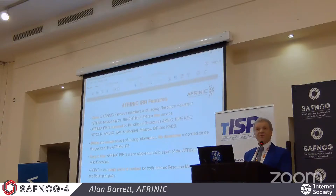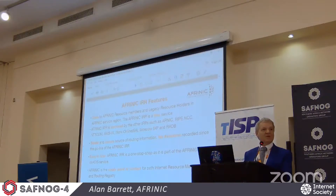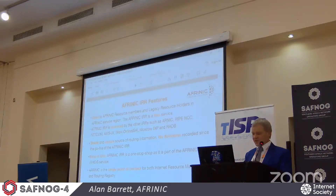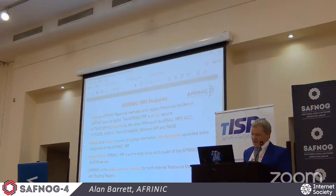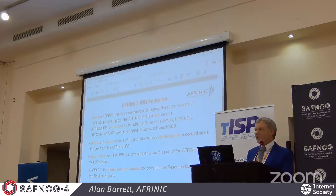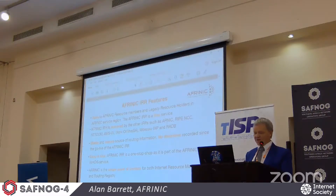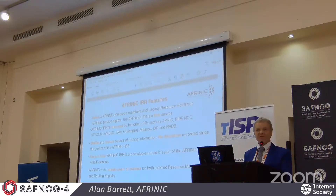AFRINIC's routing registry is a free service open to AFRINIC members. You have to have IP address space which has been assigned or allocated through AFRINIC, and then you can use it. It's been reliable — since we introduced it in 2013, there's been zero downtime on the query side. Prior to 2013, network operators in Africa were encouraged to use the RIPE routing registry, and they did that a lot. More than 1,000 AFRINIC members have created more than 48,000 route objects and route6 objects in the RIPE routing registry.